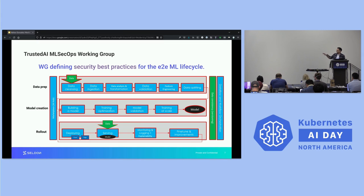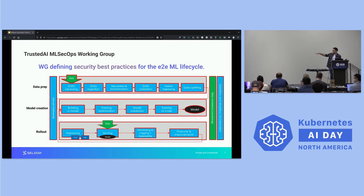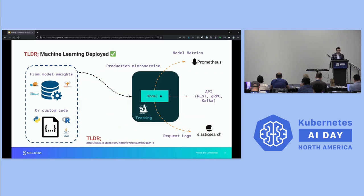That's why we started this working group defining best practices to secure the end-to-end machine learning lifecycle. As you can see, there is a security risk and an attack surface on every component. Today we only have 30 minutes, so we're going to focus on the serving aspect — the last row of that diagram, the deployment stage, the serving stage.